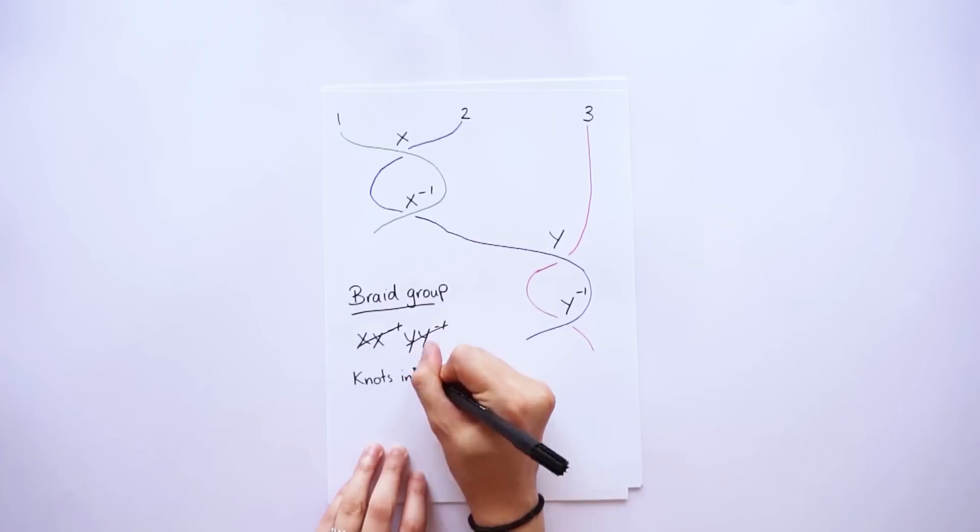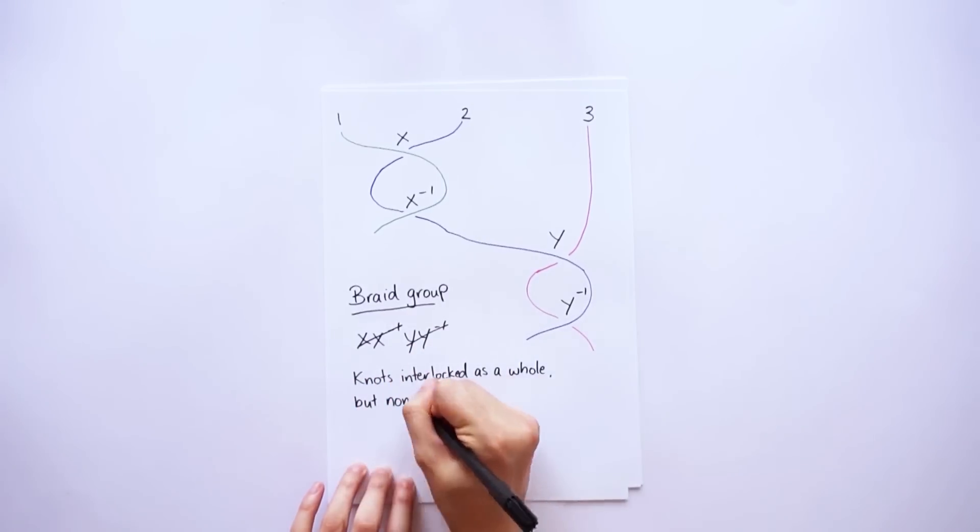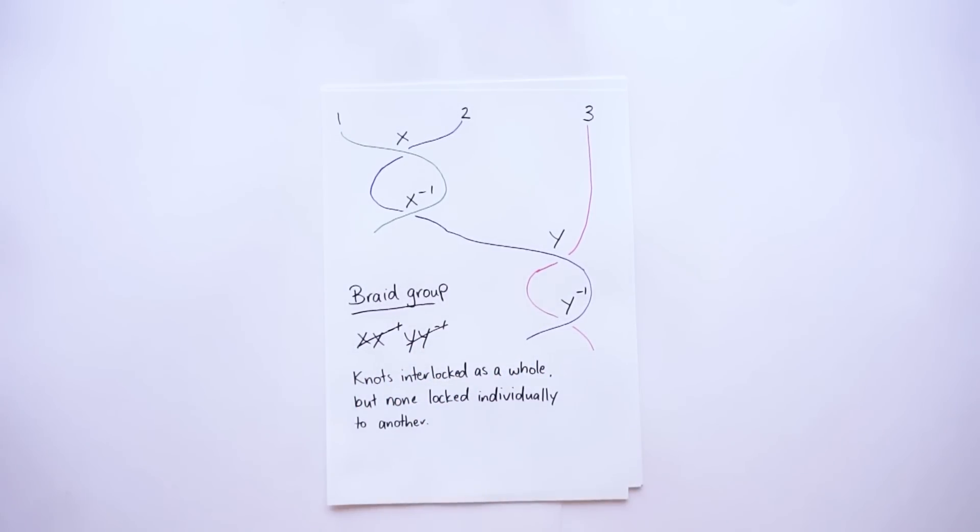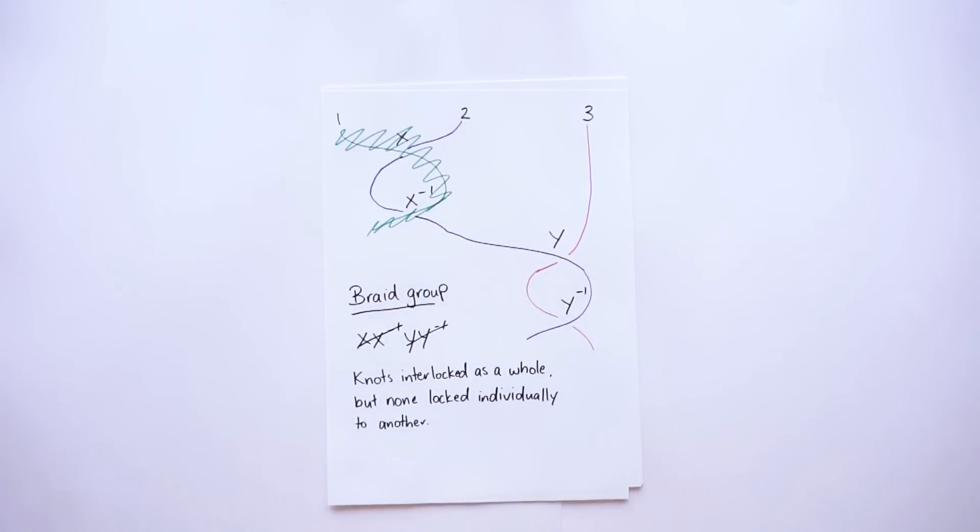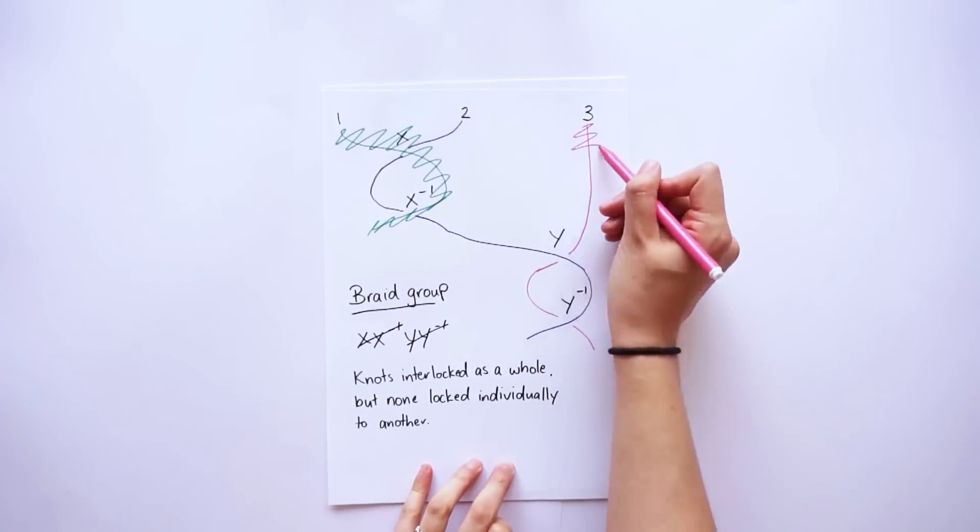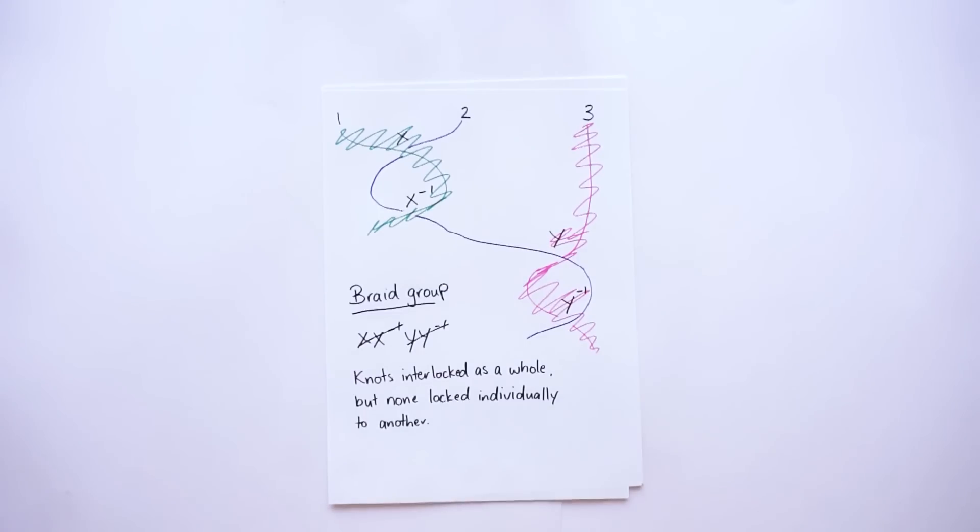So coming back to our problem, we want the knots to be interlocked as a whole, but none of them locked individually to another. If we think about this in terms of our braid group, removing a knot is like removing all crossings involving that knot. If we remove the green string, all the x's will be removed. And if we remove the pink string, all the y's will be removed. What we want is a configuration where as a whole, nothing cancels. But if we remove either term, everything cancels.